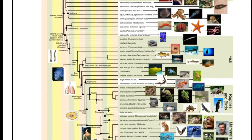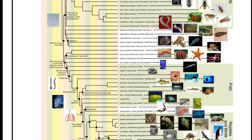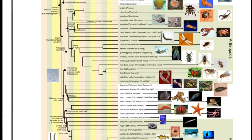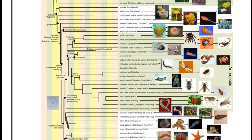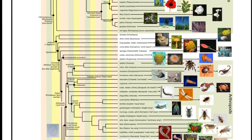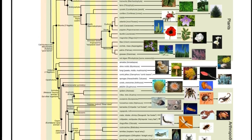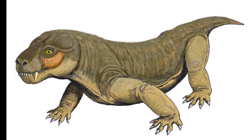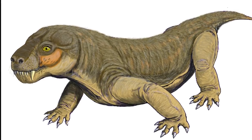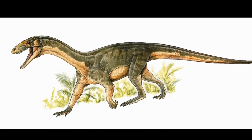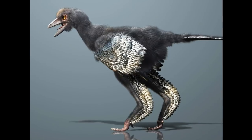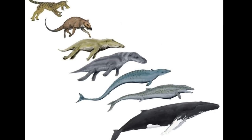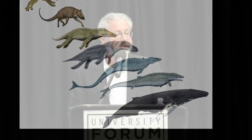Yet, despite those limitations, since Darwin's time we have discovered many hundreds of transitional fossil species, including those showing the transition of reptiles into mammals, reptiles into dinosaurs, dinosaurs into birds, land mammals into whales, and much more.